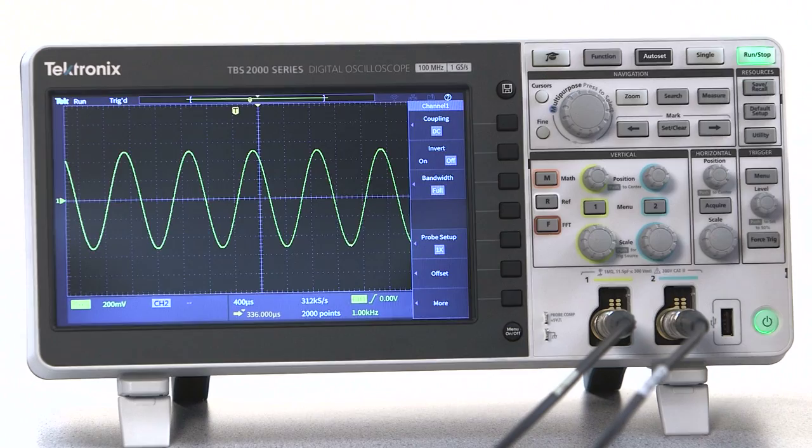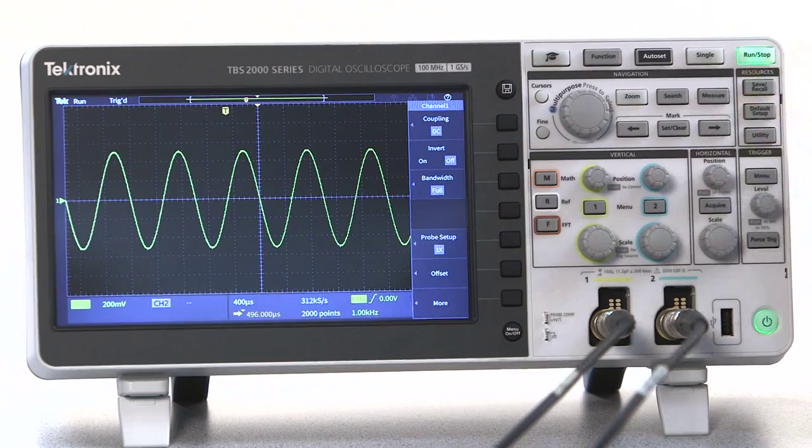The horizontal position shifts the waveform left and right so that you can see different parts of the signal.